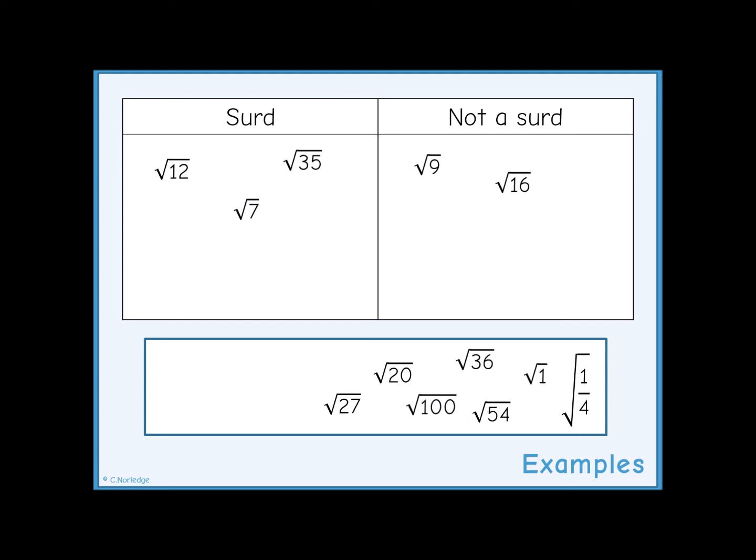So 100, 36, and 1 are square numbers, so when you square root these you will get an integer answer and they are therefore not surds.